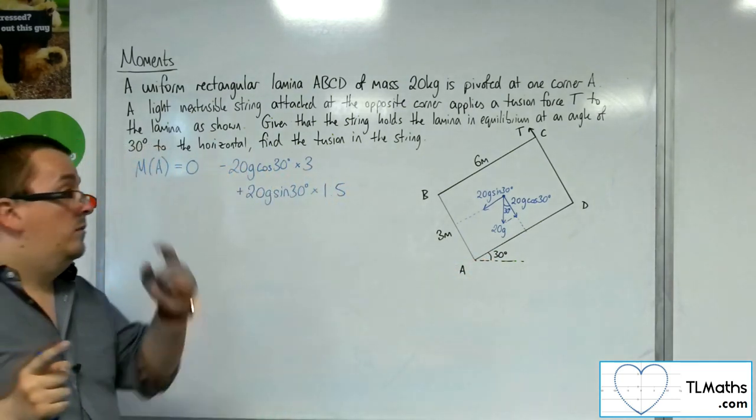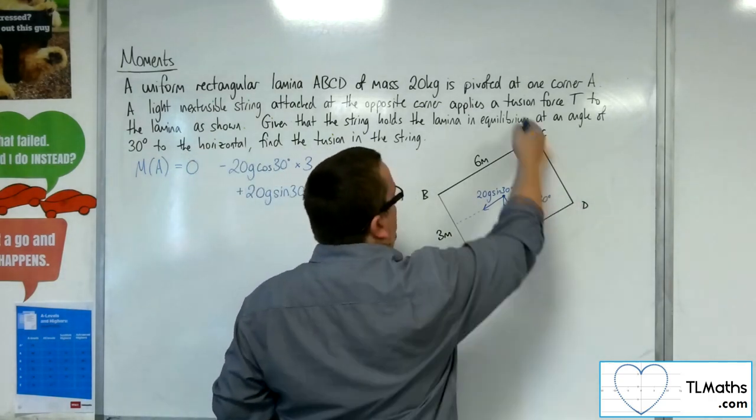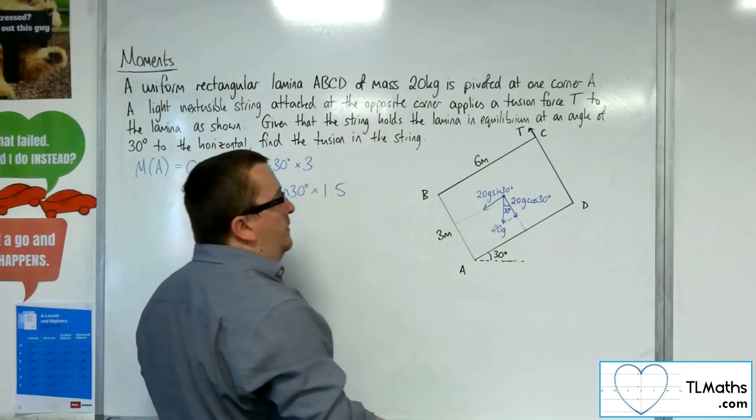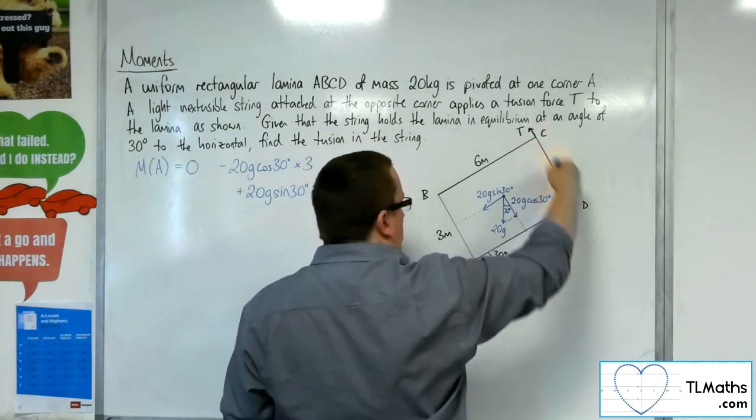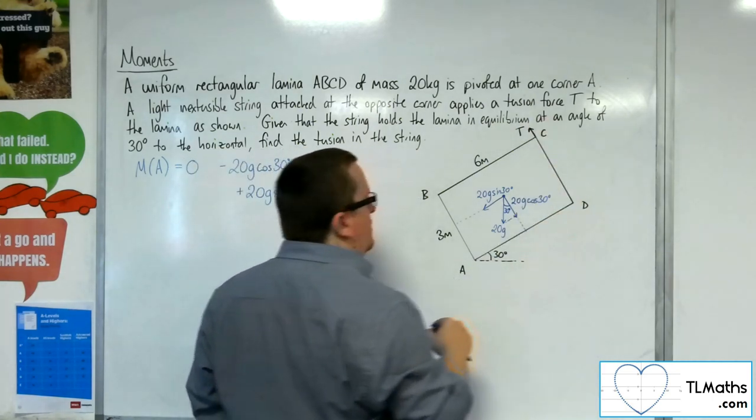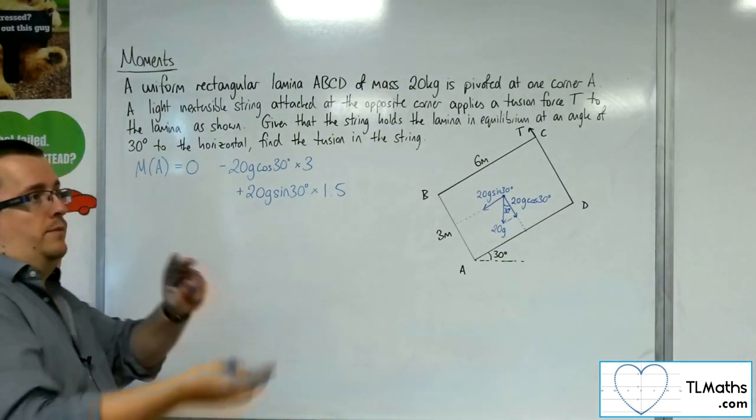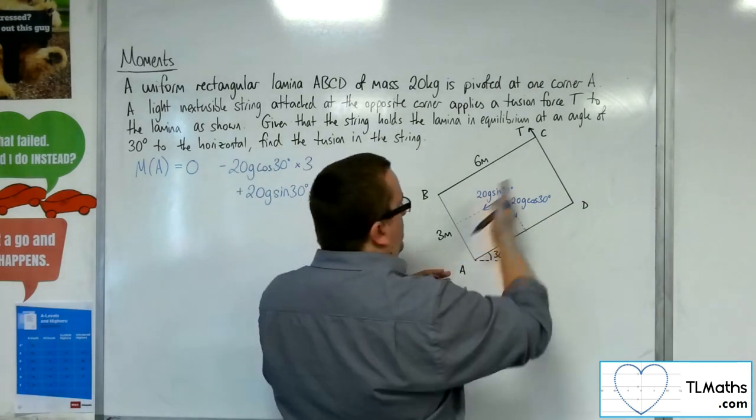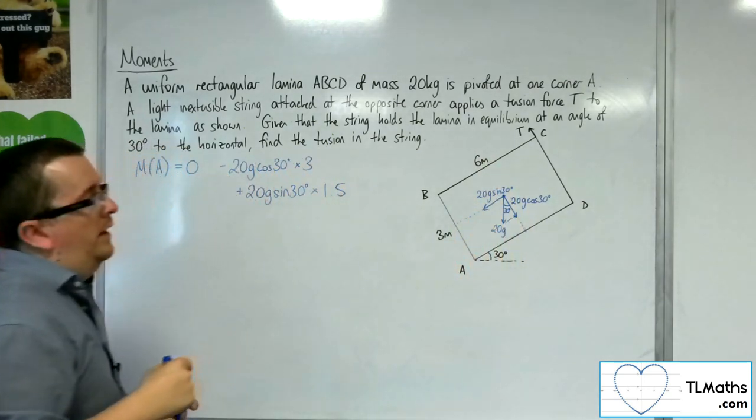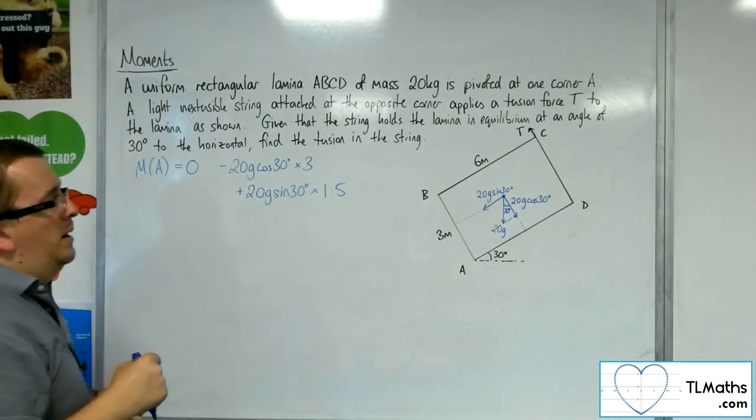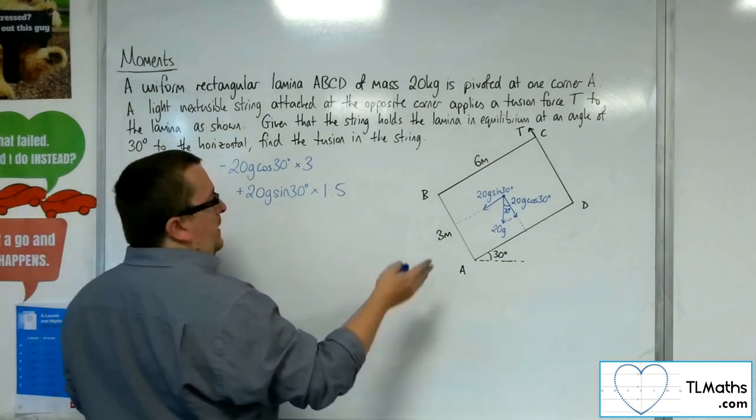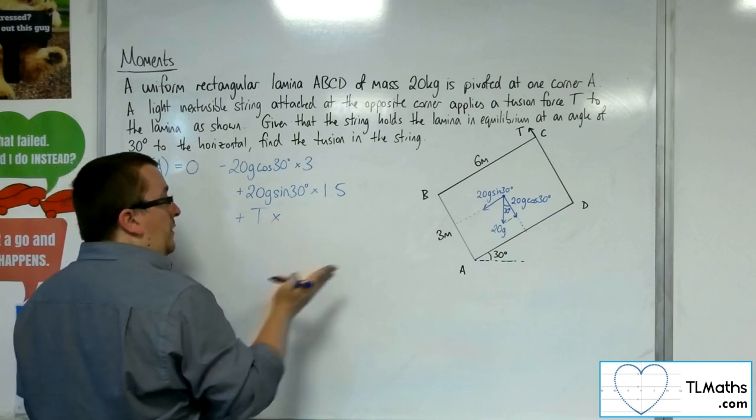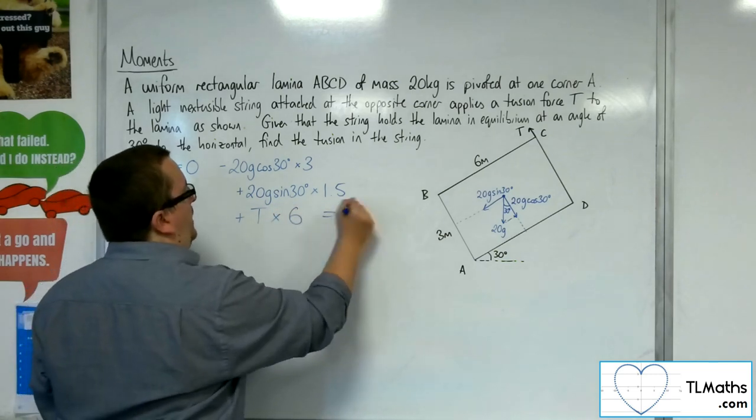And then I've got the tension. The tension is going in that direction, so that's going in an anticlockwise motion. And now the tension is 6 metres away, so this stops me from having to worry about thinking about angles with the tension. It becomes very awkward if I don't think of this as parallel and perpendicular to the plane. So I've got plus T times 6 metres, and that's got to be equal to zero.